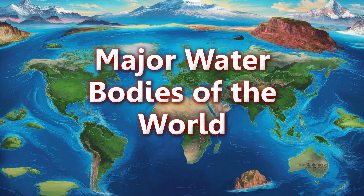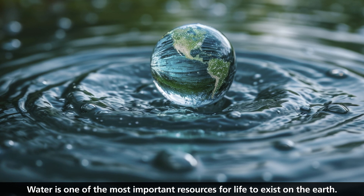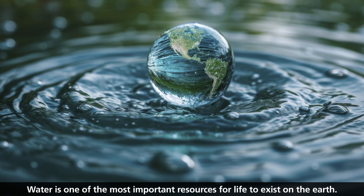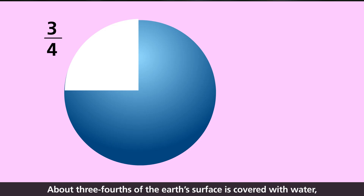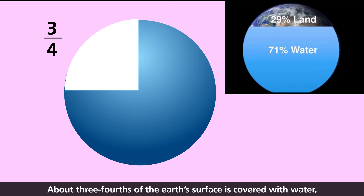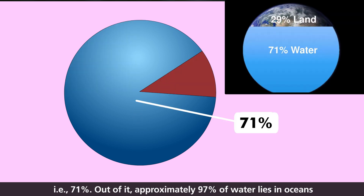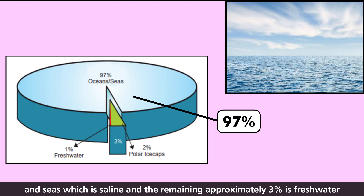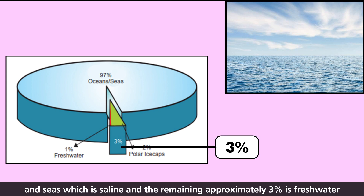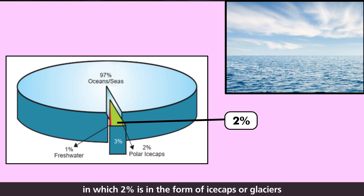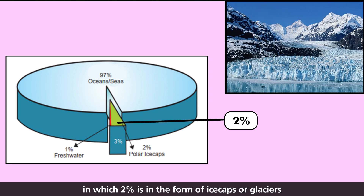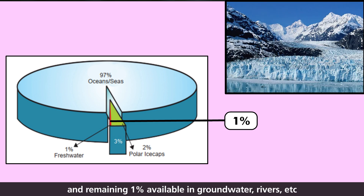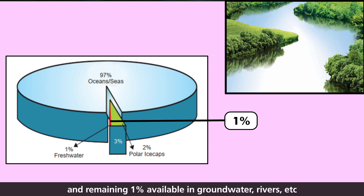Major Water Bodies of the World. Water is one of the most important resources for life to exist on the Earth. About three-fourths of the Earth's surface is covered with water, that is 71%. Out of it, approximately 97% of water lies in oceans and seas, which is saline, and the remaining approximately 3% is freshwater, in which 2% is in the form of ice caps or glaciers and remaining 1% is available in groundwater, rivers, etc.